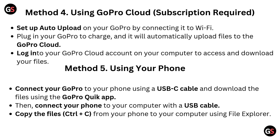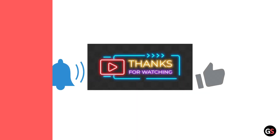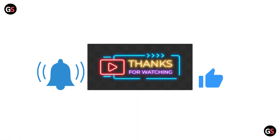Method five: using your phone. Connect your GoPro to your phone using a USB-C cable and download the files using the GoPro Quick app. Then connect your phone to your computer with a USB cable and copy the files (Ctrl+C) from your phone to your computer using File Explorer.